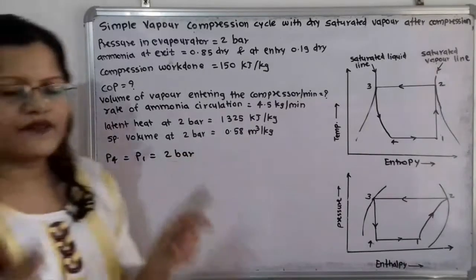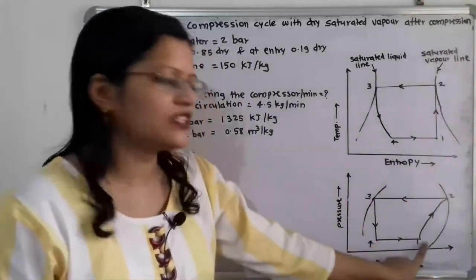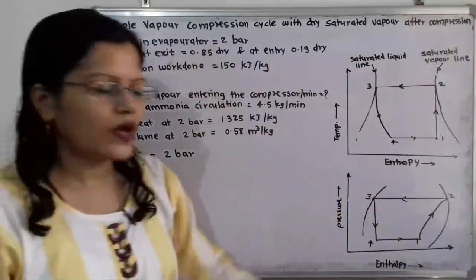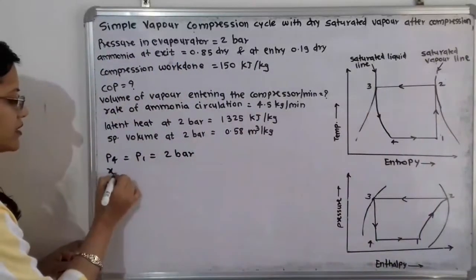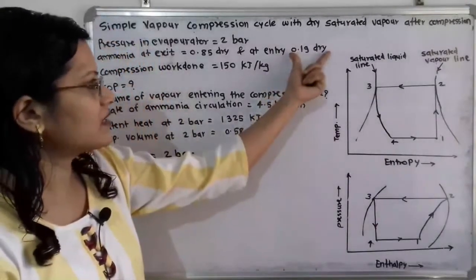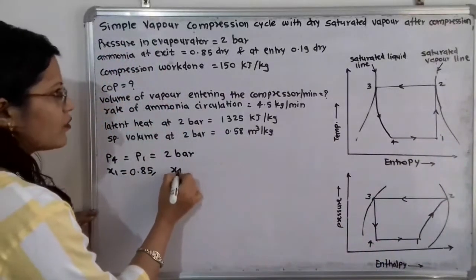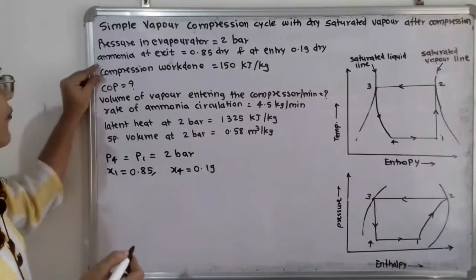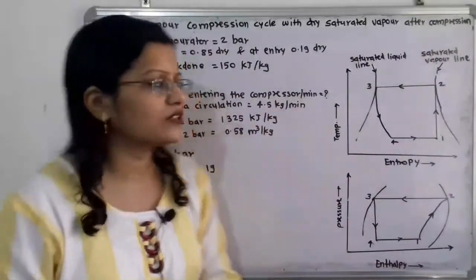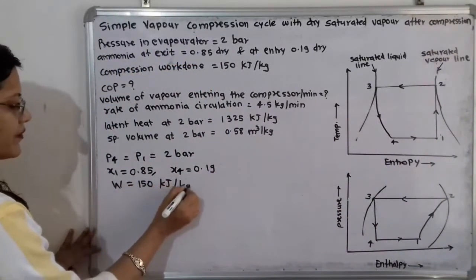The refrigerant used is ammonia. At the exit point (point 1), the dryness fraction x1 = 0.85, and at the entry of the evaporator (point 4), the dryness fraction x4 = 0.19. Process 1 to 2 is the compression process, and the work done W = 150 kilojoule per kilogram.